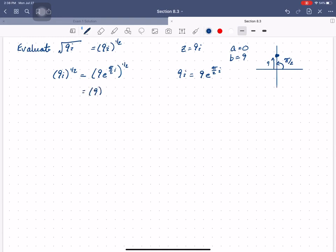Which means that 9i to the 1 half is equal to 9e to the pi over 2i to 1 half. Which is 9 to the 1 half, so square root of 9, times e to the 1 half times pi over 2i. So this is 3e to the pi over 4i, which means that my radius is 3 and my theta is pi over 4.